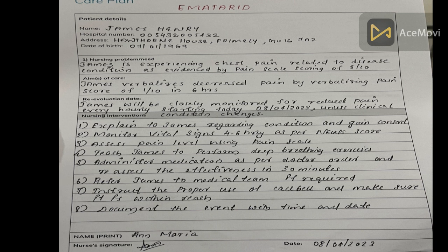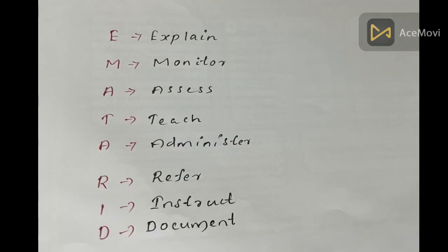Clinical condition changes — starting today — this is the re-evaluation date and re-evaluation format. This is the nursing intervention section, with a minimum of 8 points. The format is EMATARID: E — Explain, M — Monitor, A — Assess, T — Teach, A — Administer, R — Refer, I — Instruct, D — Document.